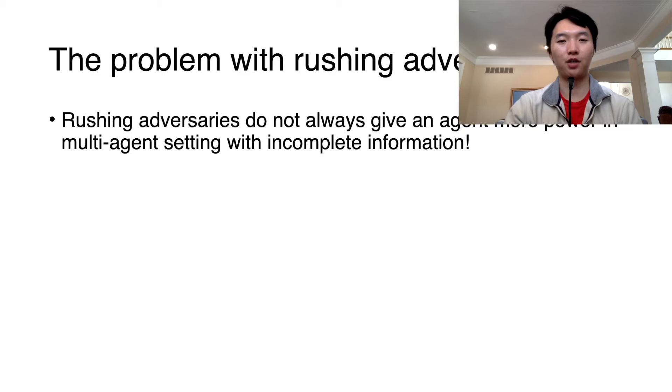Recall that a rushing adversary is one that is able to receive information from the honest parties early, which it can use to perform malicious attacks. The rushing adversary is a standard worst-case assumption in security applied to the single strategic agent setting. However, carelessly applying this assumption to the multiple strategic agent case can actually lead to non-intuitive results.